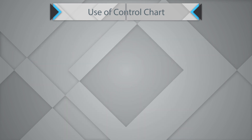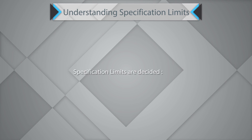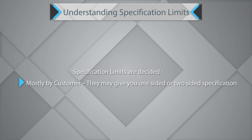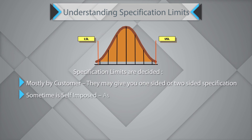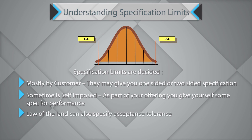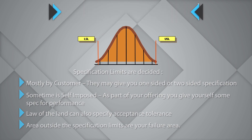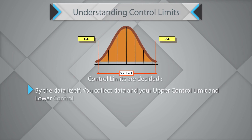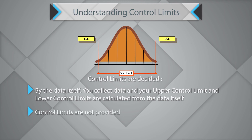To understand control charts, it is important to understand the terms of specification limits. Specification limits are mostly given by a customer and may be one-sided or two-sided. Sometimes the specification limits are self-imposed — as part of your offering, you may give yourself some specification for performance. Several regulators or laws can also specify acceptance tolerance. Areas outside the specification are your failure areas. Control limits are decided by the data itself; your upper and lower control limits are calculated from the data and represent process performance.